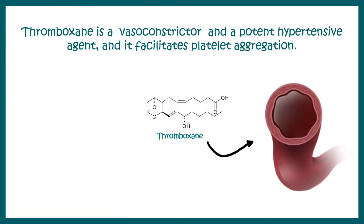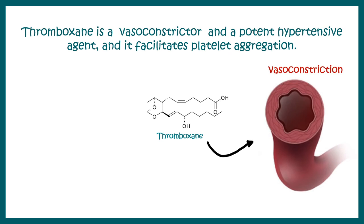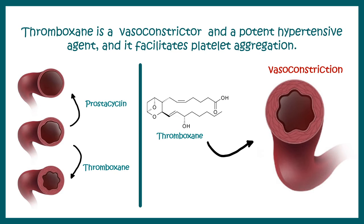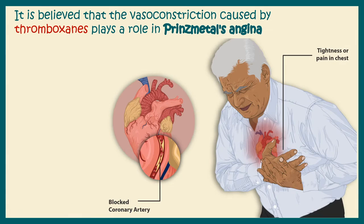Once calcium level is elevated, it helps in clot formation and vasoconstriction. One of the major functions of thromboxane is vasoconstriction. It is important to note that thromboxane and prostacycline have opposite roles — prostacycline has a vasodilatory role whereas thromboxane has a vasoconstrictive role.